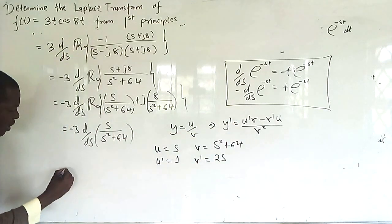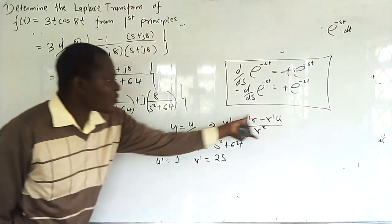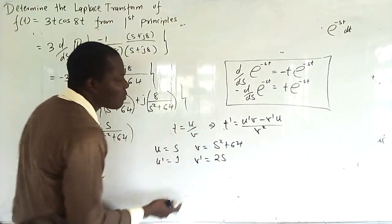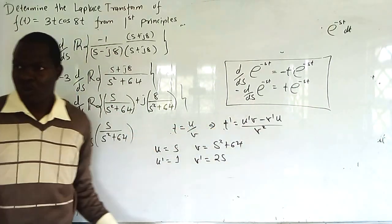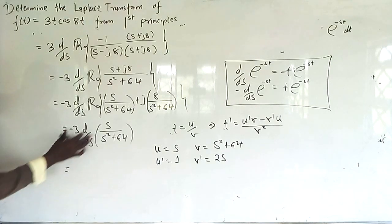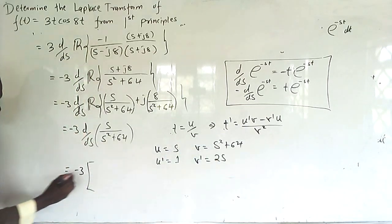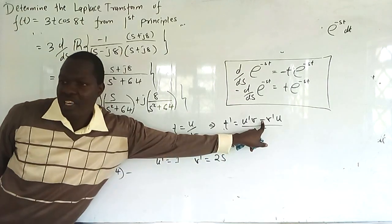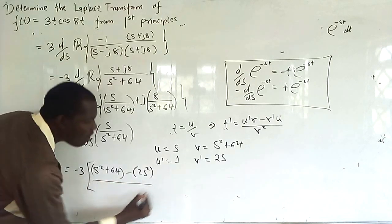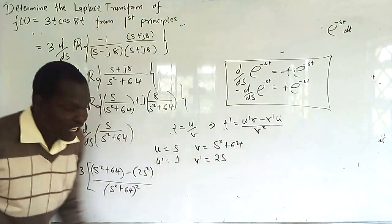Substituting into the quotient rule formula: we have -3 times [(U'·V - V'·U) / V²] = -3 times [1·(s² + 64) - 2s·s] / (s² + 64)². We are differentiating only once with respect to s.